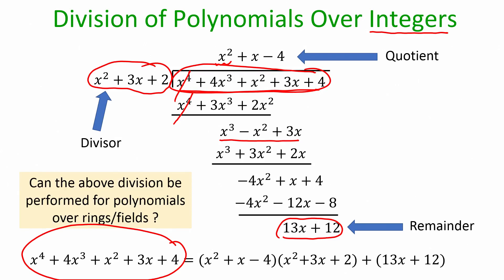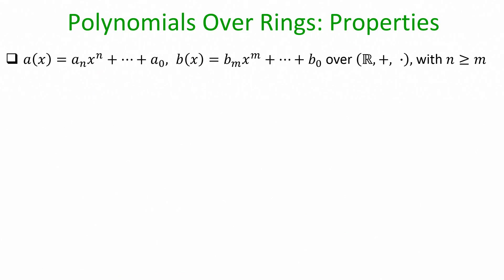The interesting question here is: in the last lecture we defined polynomials over rings and saw how to do addition and multiplication of polynomials over rings, which is similar to performing those operations over the integers. What about the division operation? Can we do something similar for polynomials defined over rings or fields?